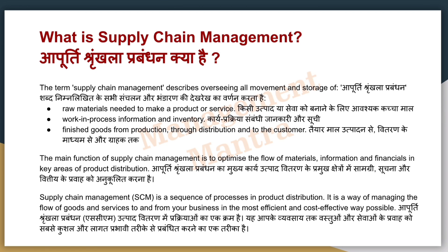First we see how many materials you need to make products and services. Then second is work in process, which flows in inventory or information flow so that the product can be completed. When it comes to completion, we are ready with finished goods, in which you have done production and then distribution, and then you reach the customer — that is the whole process in supply chain management.